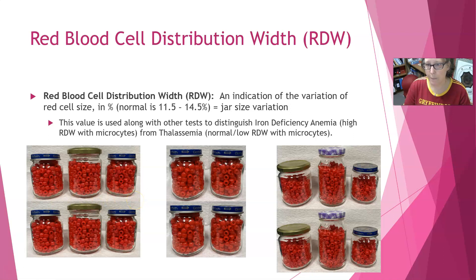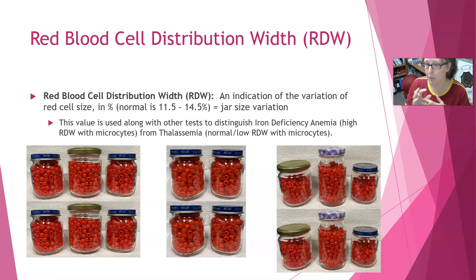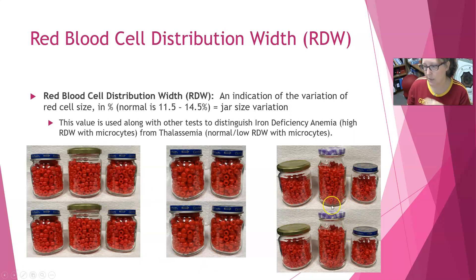The RDW can help distinguish iron deficiency anemia, which has an elevated RDW because you have some normal cells and some microcytes — variation in size — from thalassemia, which has either a normal or low RDW. In thalassemia, all the cells are consistently the same; they may all be small microcytes, but they're uniformly made, resulting in a normal RDW.